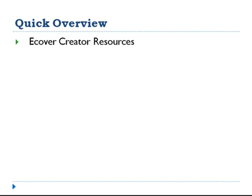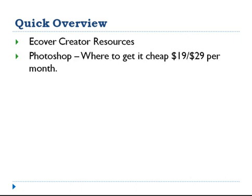I want to give you some eCover Creator resources first. Then I'm going to show you how to get Photoshop where you can get it cheap for $19 or $29 per month. That way if you don't want to spend $300 on it right off the bat, you can go this avenue. Then I'm going to use Photoshop in a live example so you can see exactly how to change the title, subtitle, graphics, background, and so forth. So let's get started.